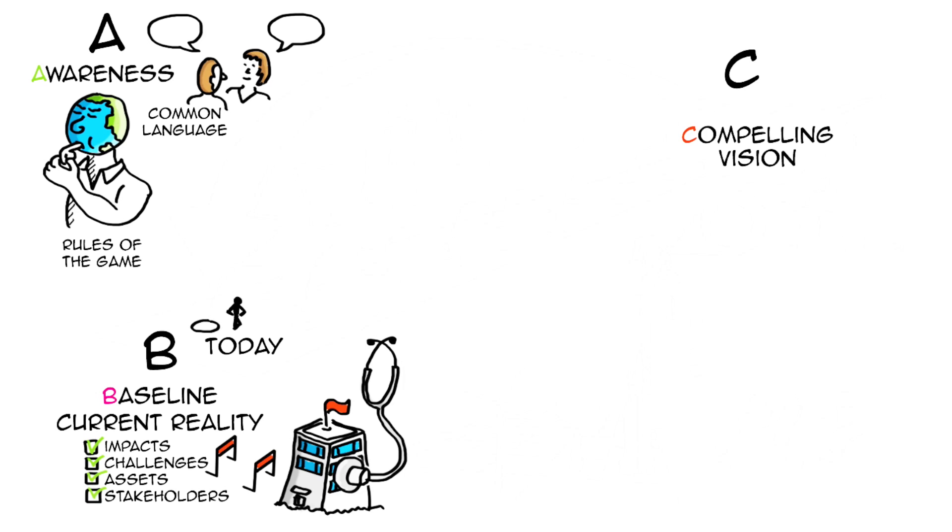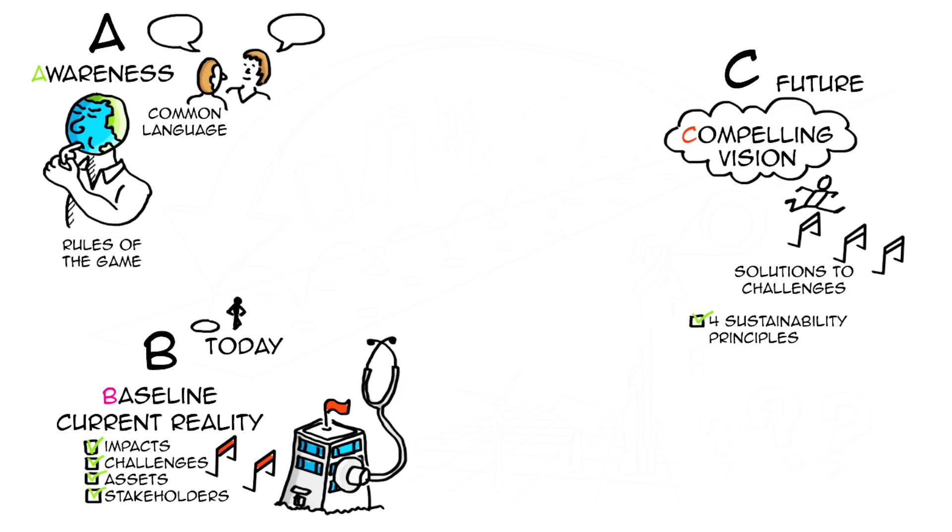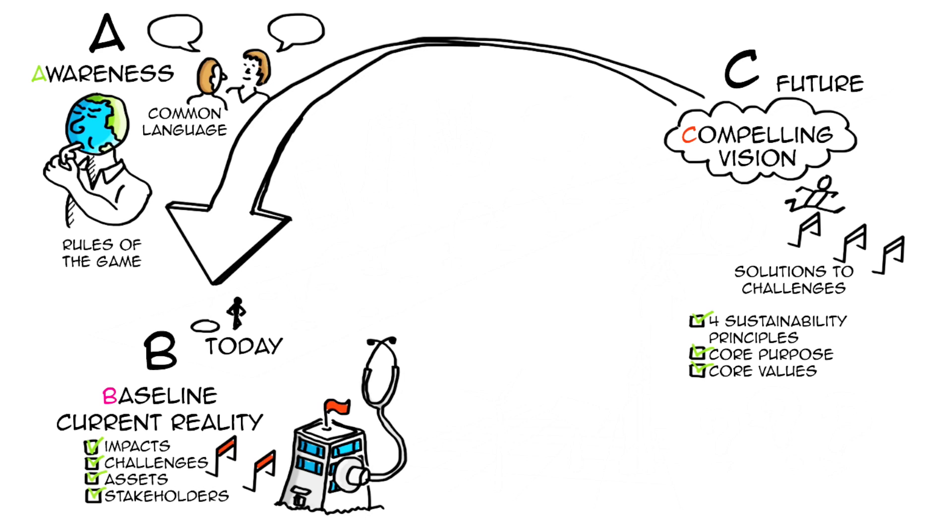C, compelling vision. This is about creating a sustainability vision and imagining potential solutions to the challenges identified in the baseline assessment. The vision includes complying with the four sustainability principles but also our core purpose and our core values.